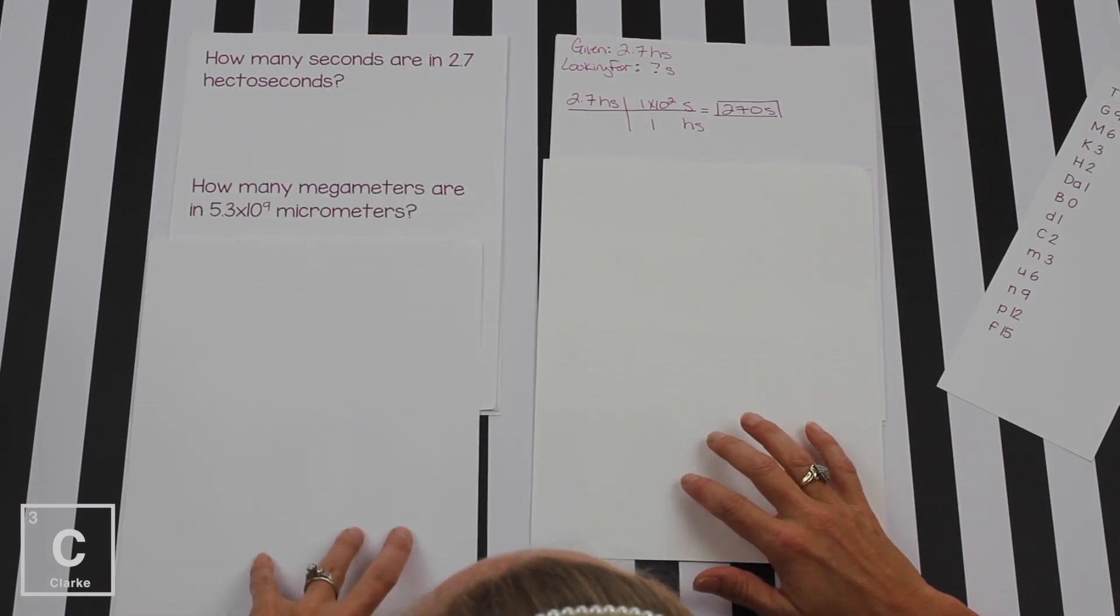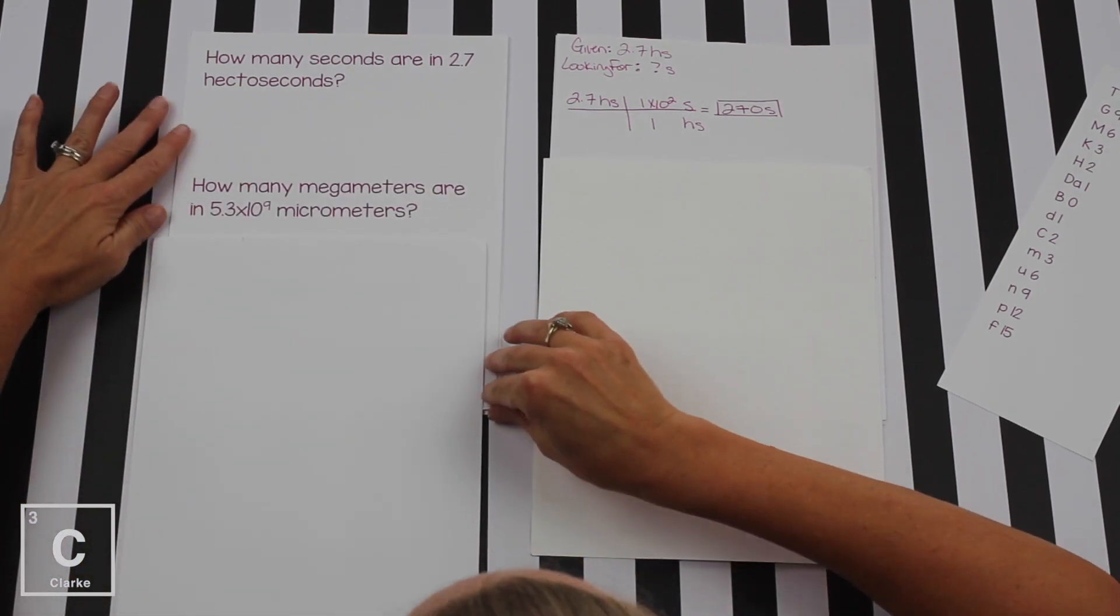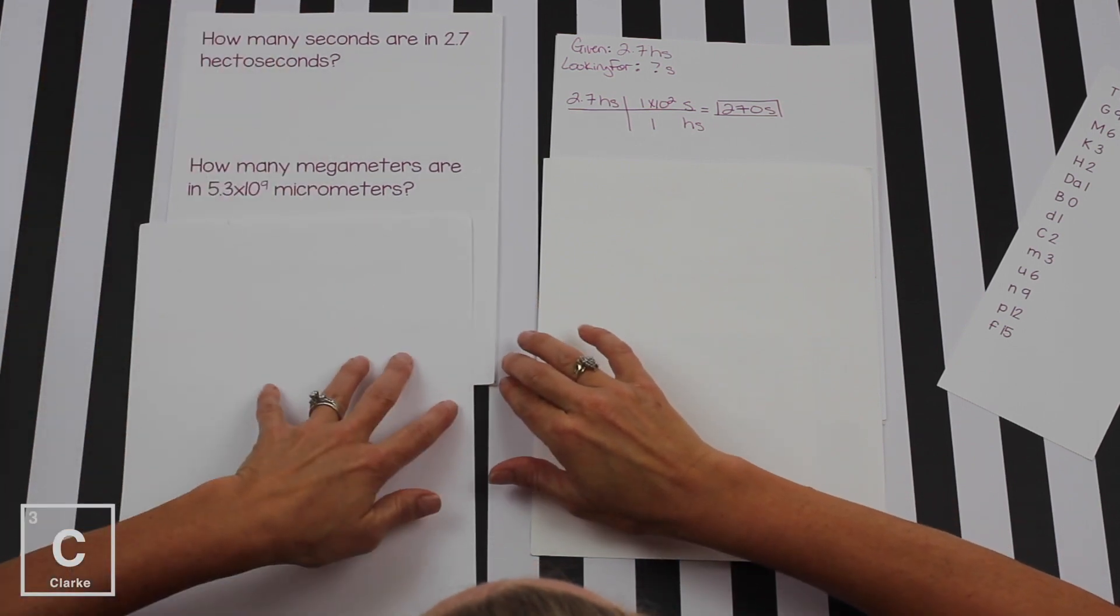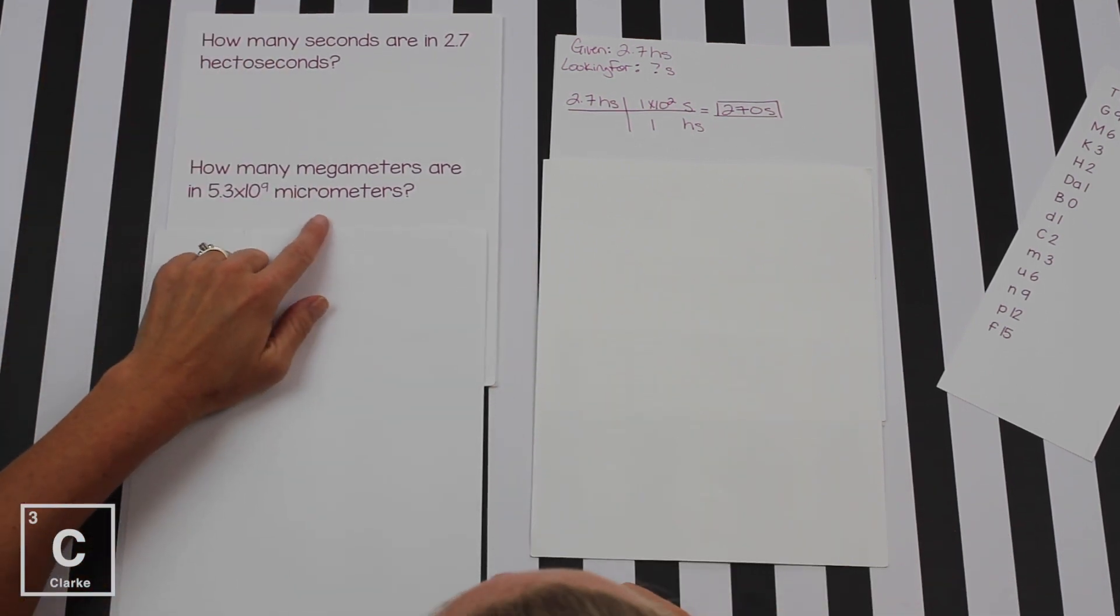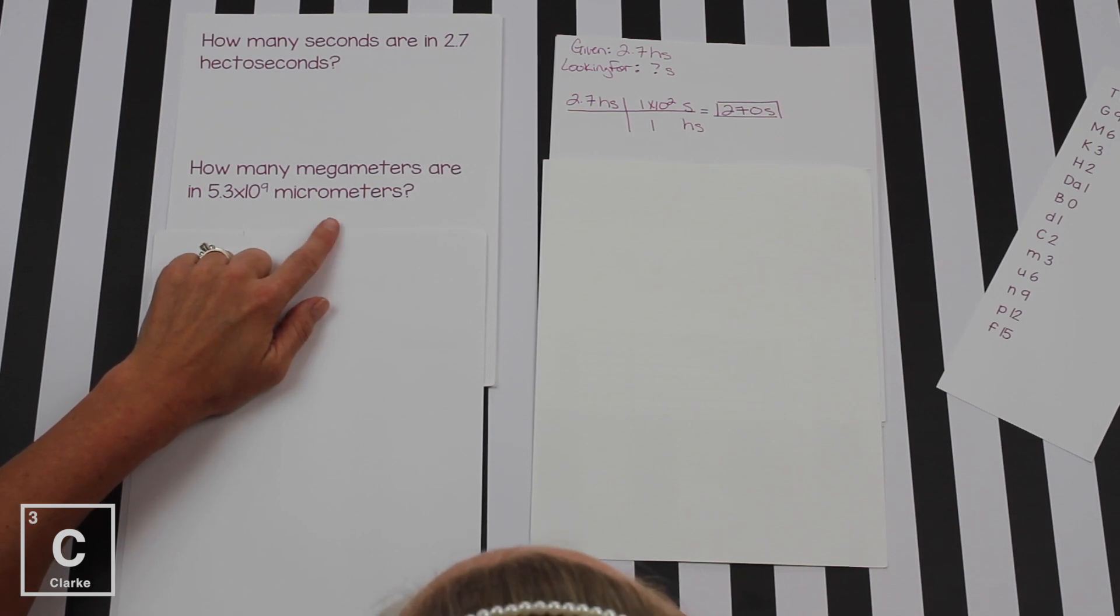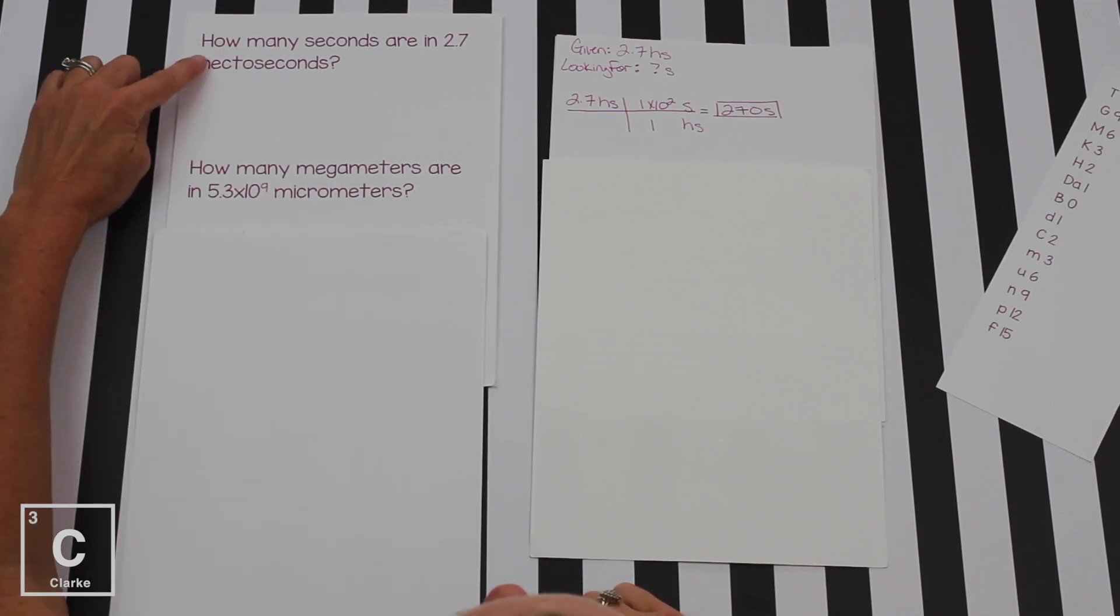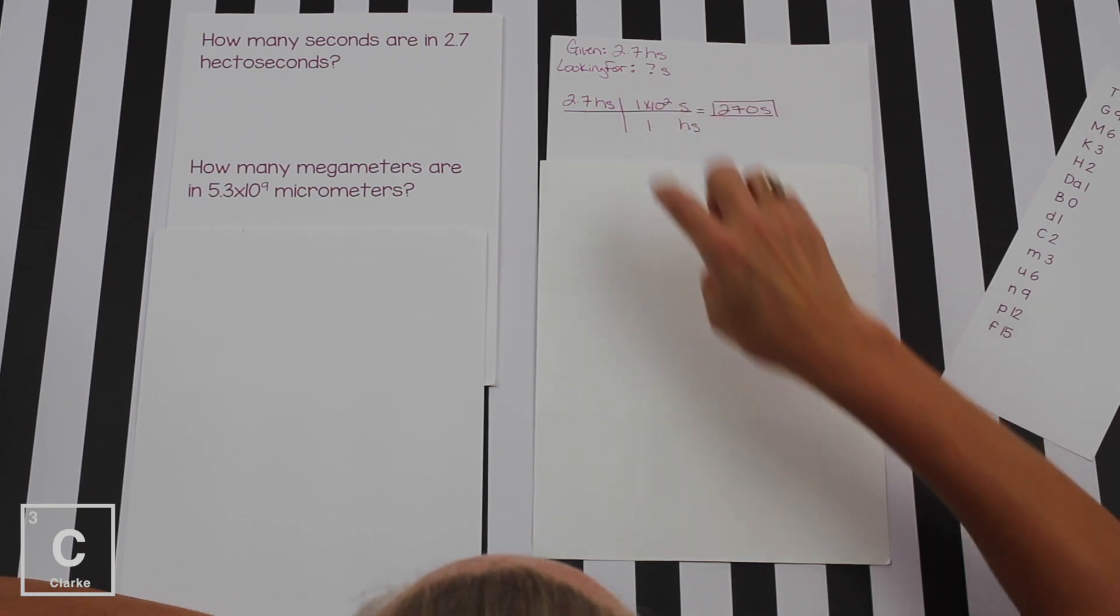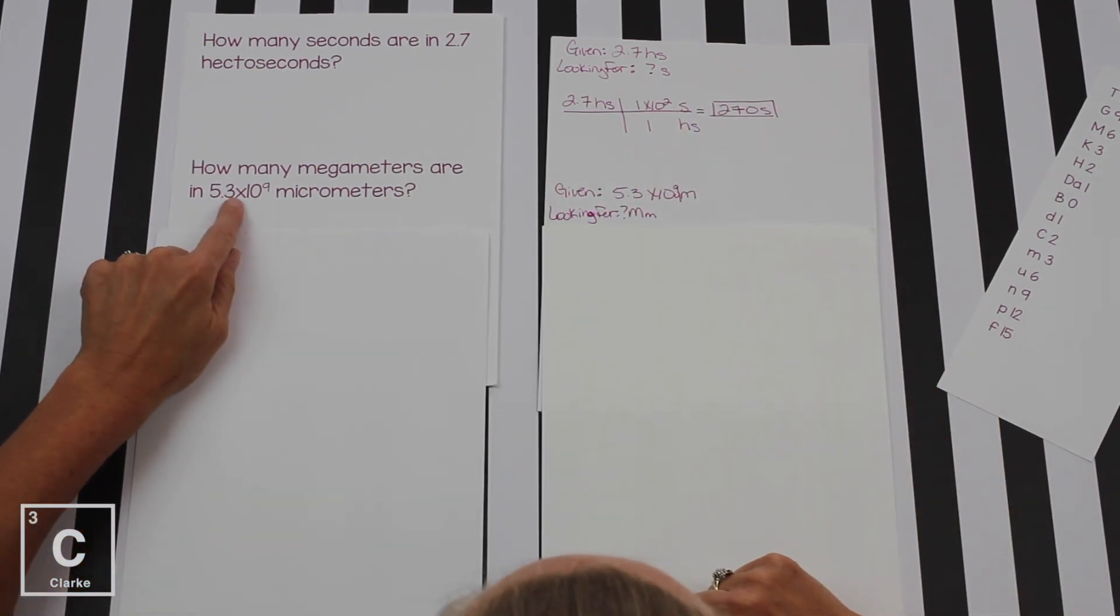Let's look at a second problem. How many megameters are in 5.3 times 10 to the 9 micrometers? Now if you notice, this problem does not have a base unit in it. If a problem does not have a base unit, it's going to need two conversion factors.